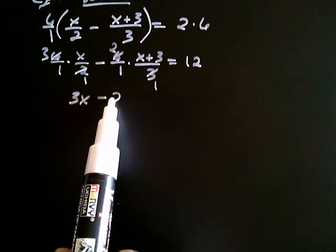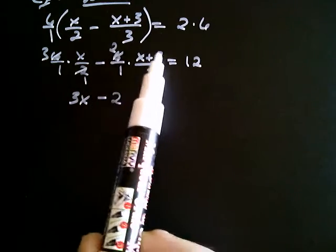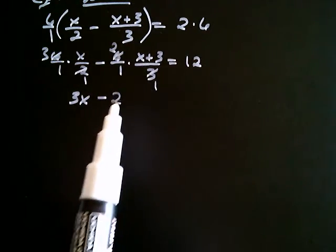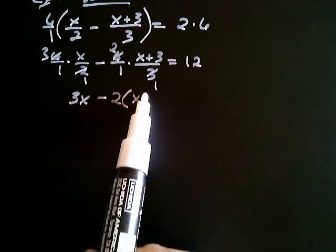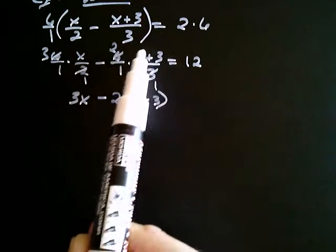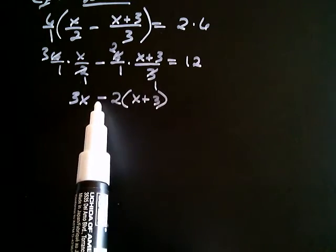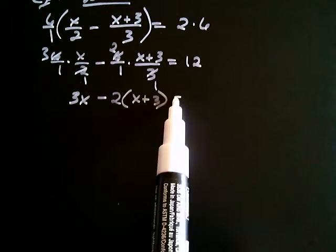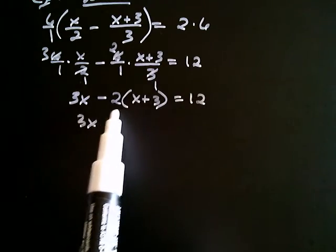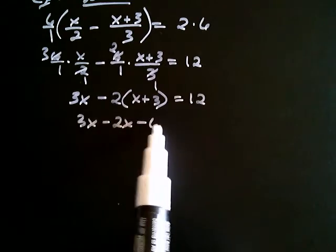But don't forget, you have to multiply this 2 by x plus 3. Now it's not just 2 times x, it's 2 times the whole x plus 3, and that's why we need parentheses right here. Do you see that? It wasn't just 2 times x, it was 2 times the whole thing. So we put the whole quantity x plus 3 in parentheses. And in the next step we're going to distribute that negative 2. On the right-hand side we have 12. So here we go. It's 3x. Negative 2 times x is negative 2x, and negative 2 times positive 3 is negative 6 equals 12.